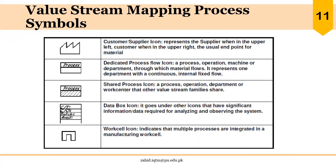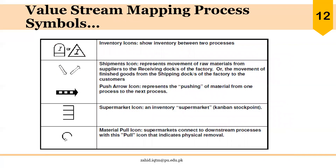The customer or supplier icon represents the supplier when in the upper left and the customer when in the upper right corner. The process icon represents a process, operation, machine, or department through which material flows. The data box icon goes under other icons and contains significant data for analyzing the system — typically under the process icon, showing cycle time, changeover time, batch size, availability, etc. The inventory icon — generally a triangle with a capital I — shows inventory between two processes, or work-in-process inventory.